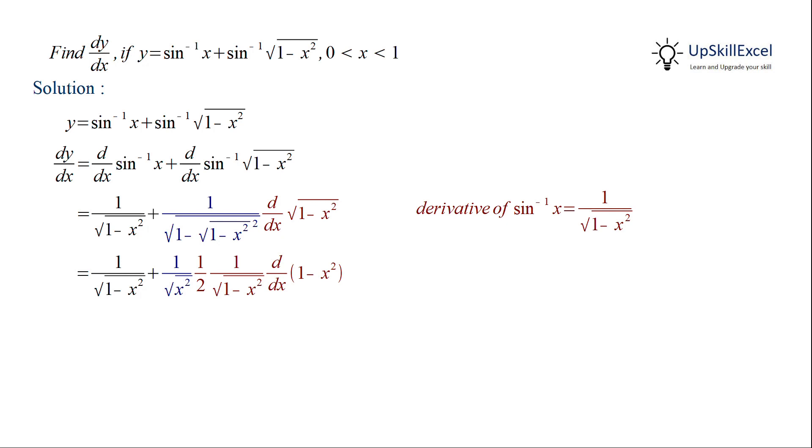Here again we have applied the chain rule. Now we know that d by dx of 1 minus x square is equal to minus 2x. On doing further simplification, that is cancelling out 2 and x, we get terms which are equal to each other and they cancel out, giving us the result 0.